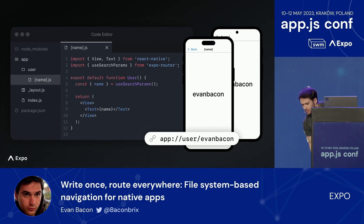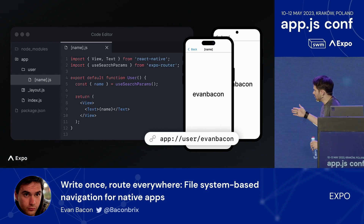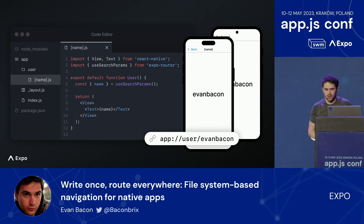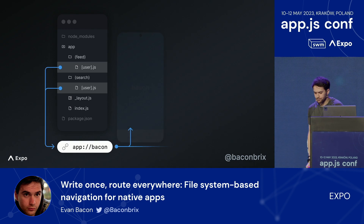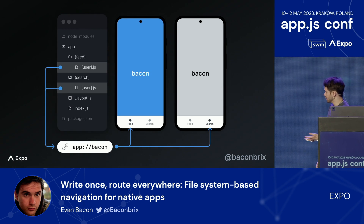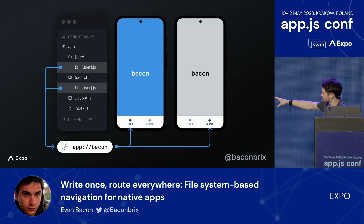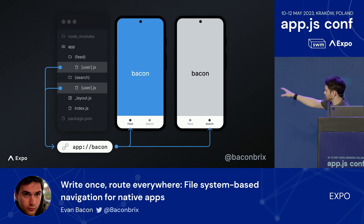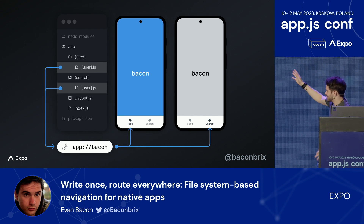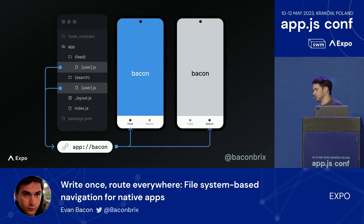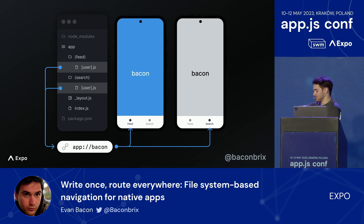Expo Router supports modern conventions from the web, like dynamic routes. It also supports catch-alls and groups and a number of other things you'd find on the web. But it also introduces some new concepts that are very app-specific, like shared routes, where you want to present the same screen with the same URL in multiple different places at the same time — something added to make up for the fact that there's no tabs concept in native apps.